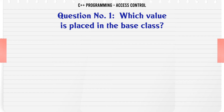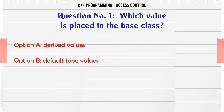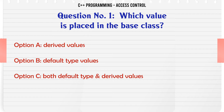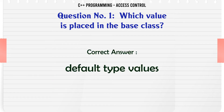Which value is placed in the base class? A. Derived values. B. Default type values. C. Both default type and derived values. D. Null value. The correct answer is: Default type values.